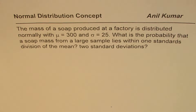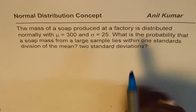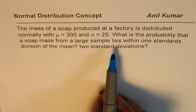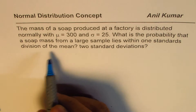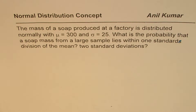I'm Anil Kumar and in this video we'll use very basic concepts of normal distribution. The question here is: the mass of a soap produced at a factory is distributed normally with mu equals 300 — mu means mean — and sigma, the standard deviation, equals 25. Find the probability that a soap mass from a large sample lies within one standard deviation of the mean, or two standard deviations.